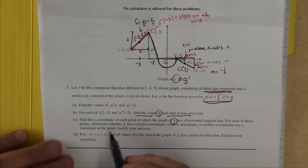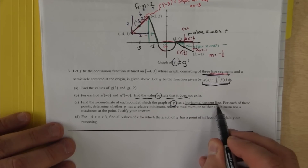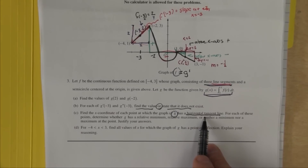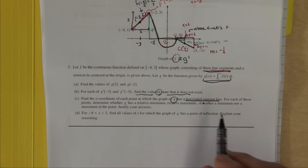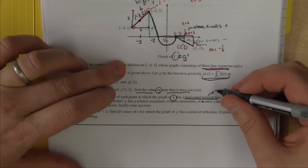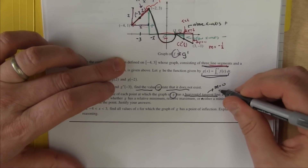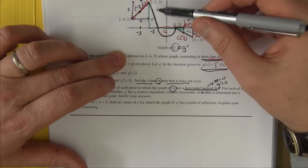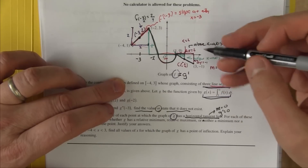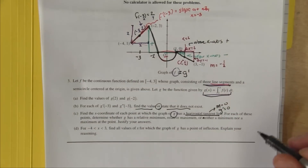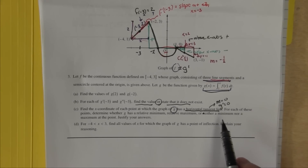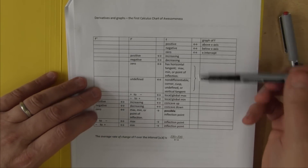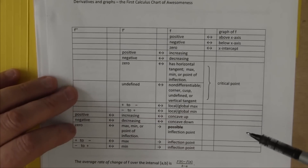We're first asked where the horizontal tangent lines are. Looking at a graph of g prime, we need to know where g has a horizontal tangent line. If g has a horizontal tangent line, that means the slope of the tangent is 0, and the slope is the derivative. So we're literally looking for where g prime is 0, and we can spot those points right away — right here and right here.